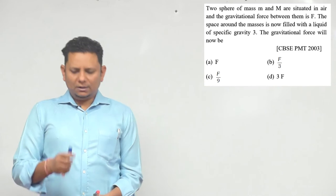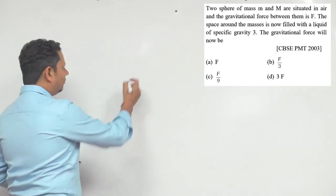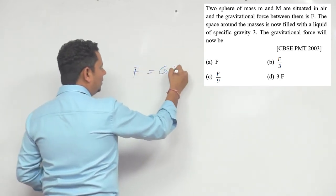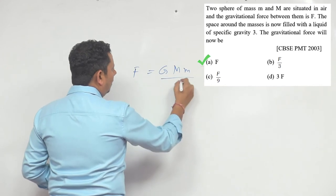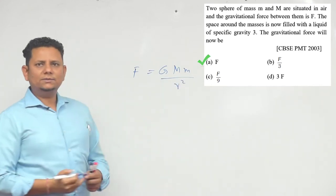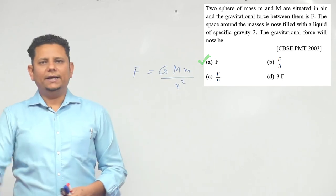Between mediums, how much does it have to be? Gravitational force is always G M M by R square. The medium doesn't matter, so the right answer will be A.